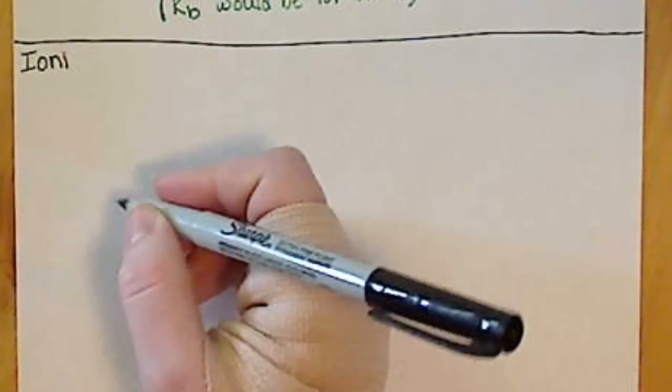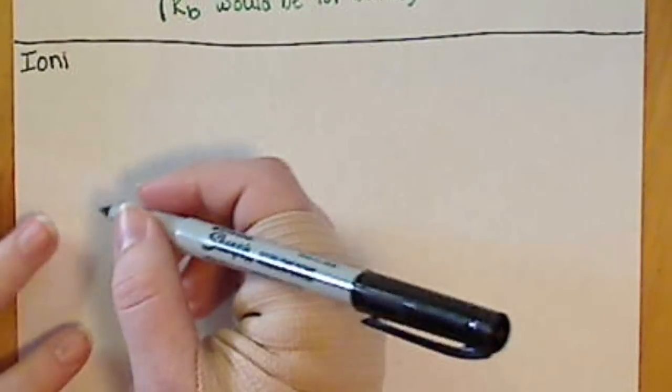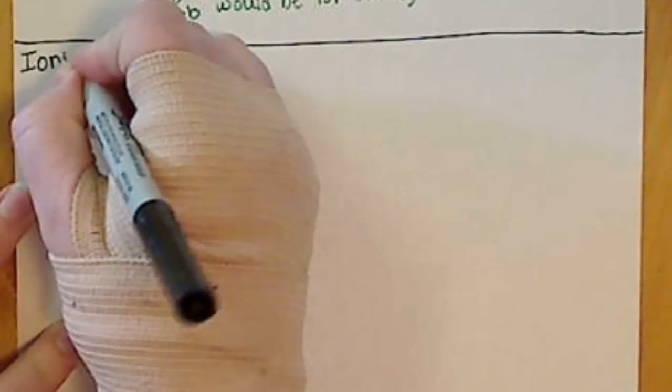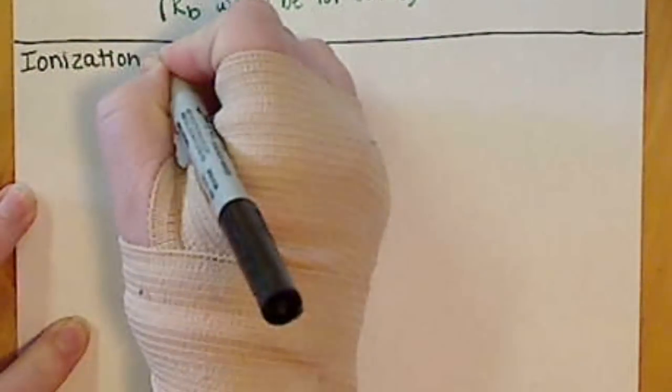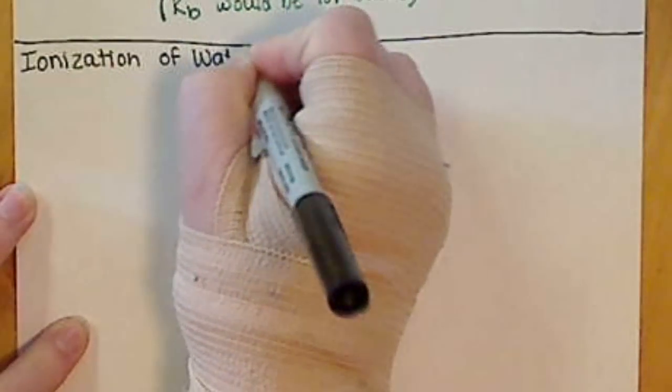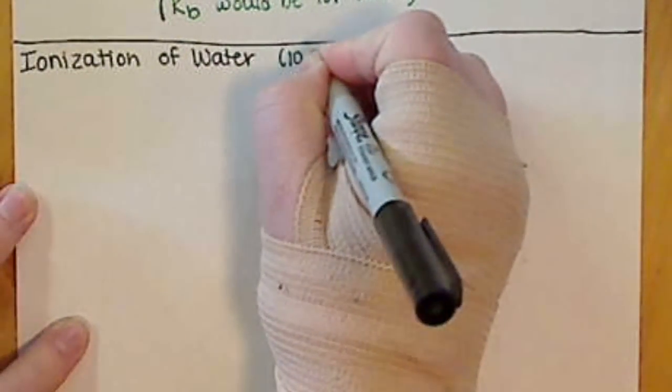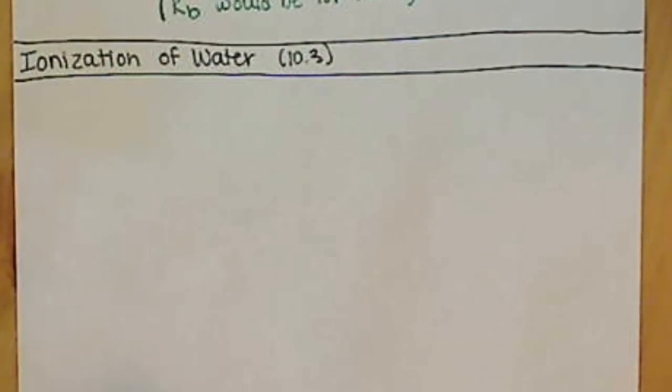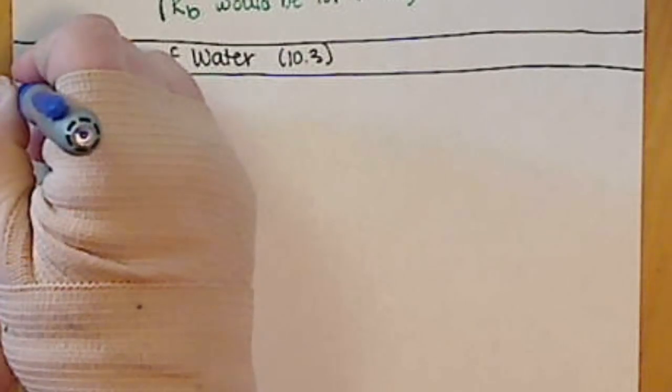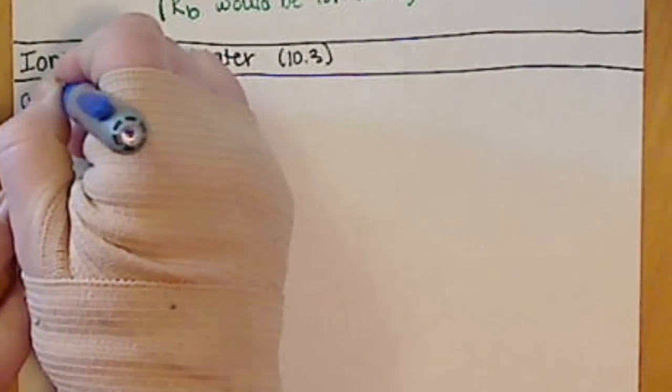In a previous video we learned that water can be both an acid and a base. Now we're going to look at water being both an acid and a base when it's by itself. This is called the ionization of water, covering section 10.5. When an acid and a base act at the same time like this, we call it auto-ionization.